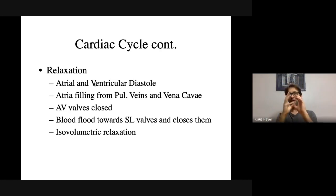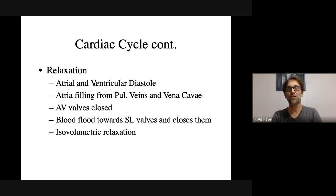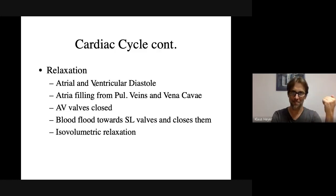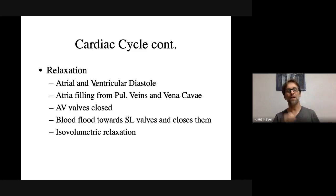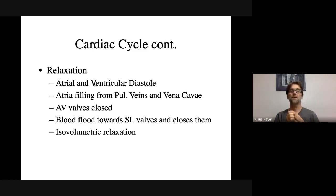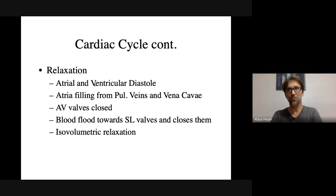Blood that had just been ejected from the ventricles is going to turn around and try to go back into the ventricles, because when those ventricles relax the pressure drops and that blood wants to go back. But it cannot get back in — the semilunar valves close, preventing the blood from going back into the ventricles.